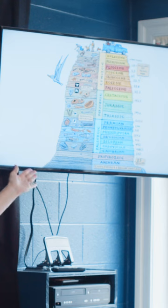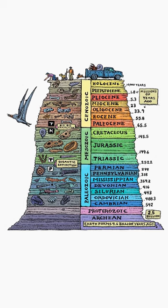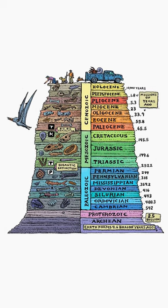The fossil record proves the evolutionary order of life, simpler creatures on the bottom, and more complexity as you move up the geologic column.